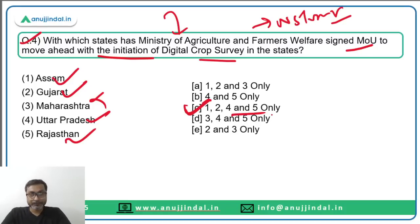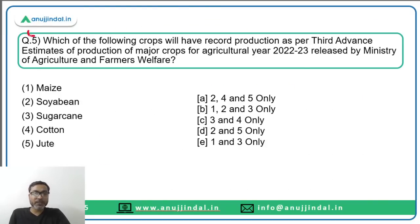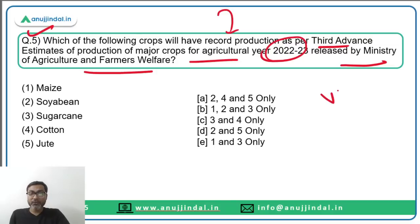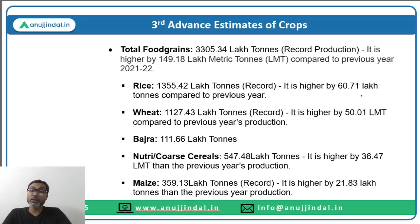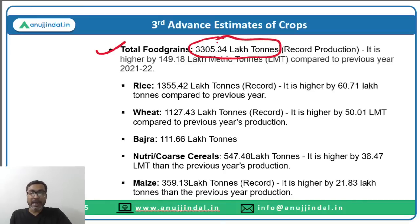Question number five: Which crops will have record production as per the third advance estimate of production of major crops for agriculture year 2022-23, released by the Ministry of Agriculture? This is very important especially for NABARD aspirants. The total food grain production will be 3305.34 lakh tons showing record production.